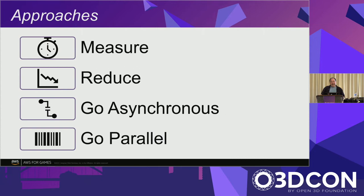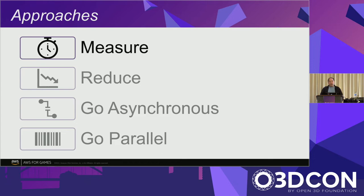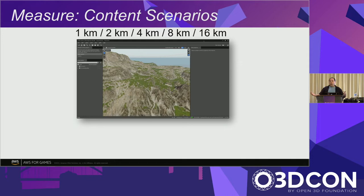So, time to optimize. For me, optimizing any system tends to come down to these approaches in pretty much this order for almost any performance optimization: measuring what you're doing, reducing it, and then finally going asynchronous and parallel. Before doing anything, it's super important to measure. You really need to know where you're starting from and, with each optimization you do, whether it's taking you in the right direction and by how much.